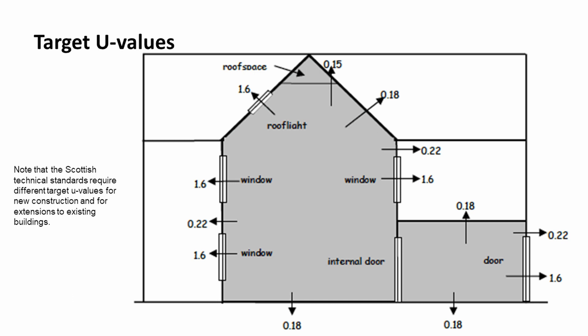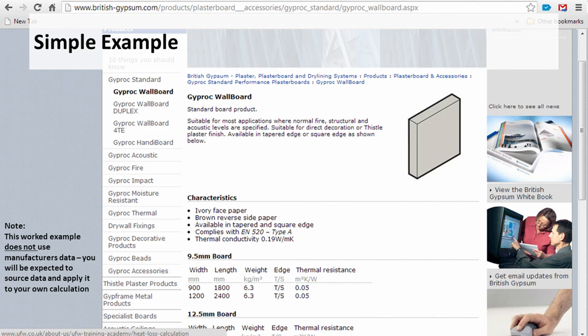And the second thing we need to understand for our example is our manufacturer's information. So for each layer, you should have a specification for real material that you can then research on the internet. For example, British gypsum looking at standard wallboard, we can find thermal conductivities and thermal resistances for each material.